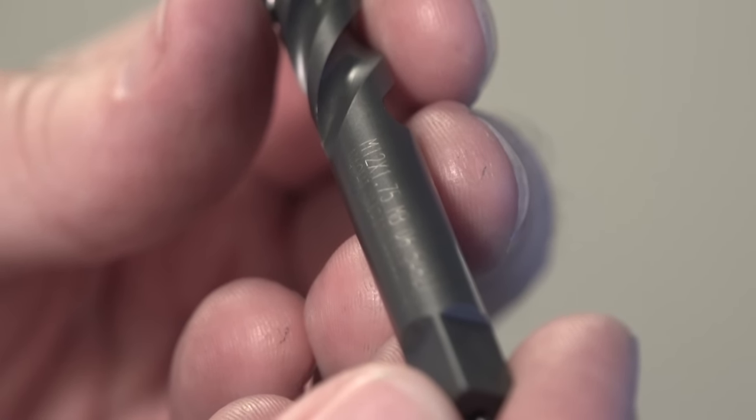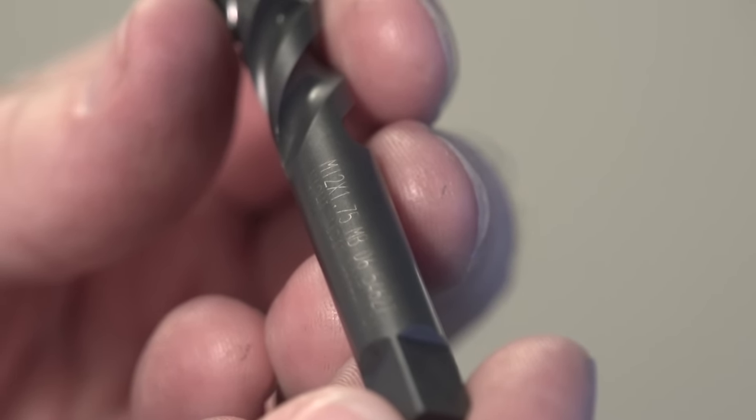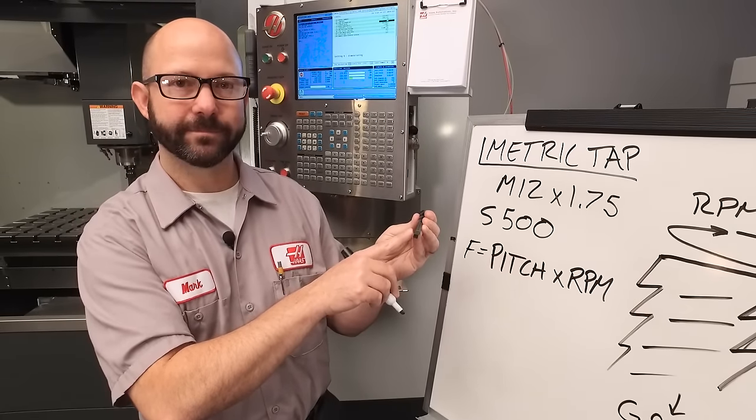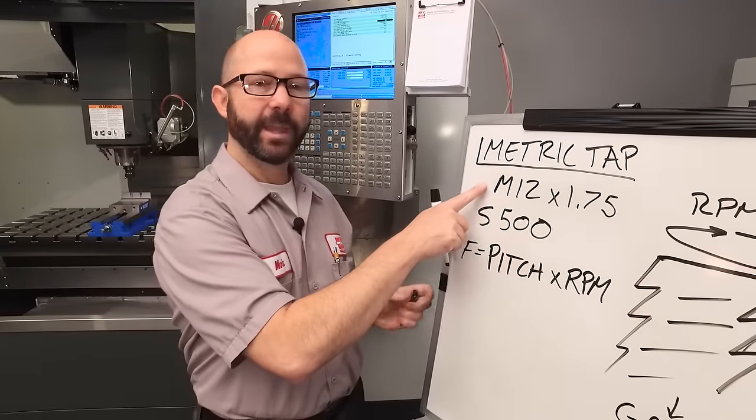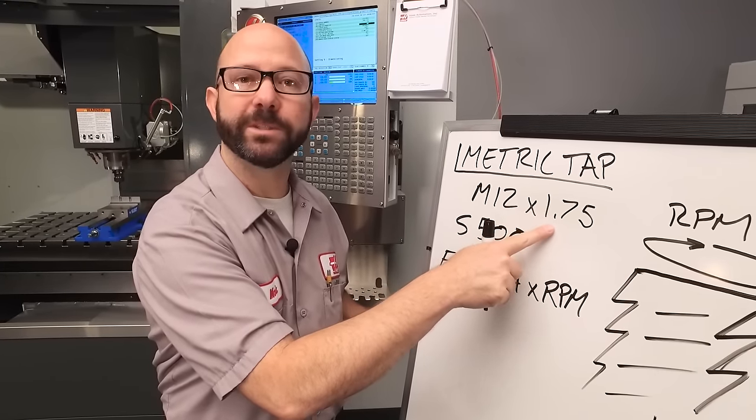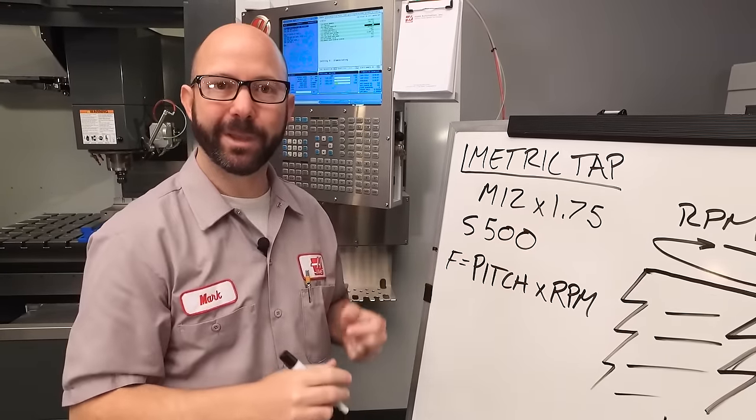Now where do we get our pitch from? Well lucky for me, it's actually written on my tap. M12 by 1.75. M12 is the basic diameter and 1.75, 1.75 millimeters, is our pitch.